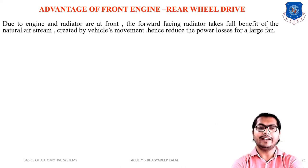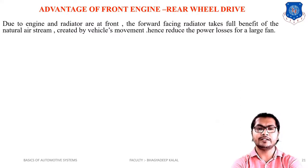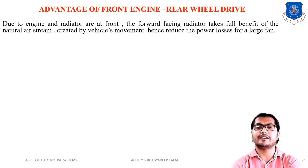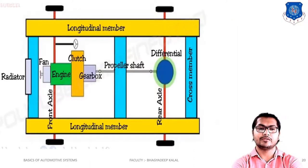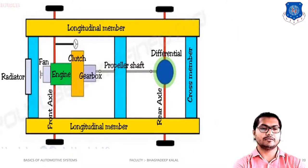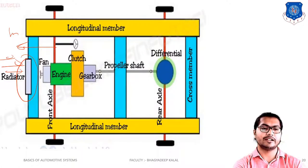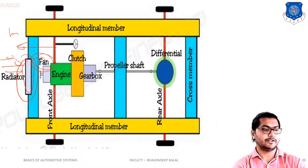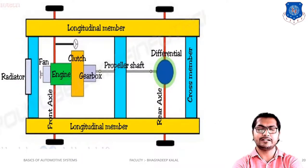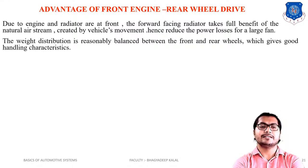Advantages of front engine rear wheel drive: First, because the engine and radiator are at the front, the forward-facing radiator takes full benefit of the natural air stream created by the vehicle's movement, hence reducing power losses for the cooling fan.